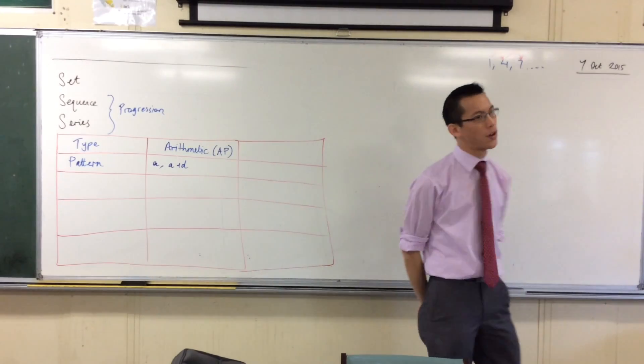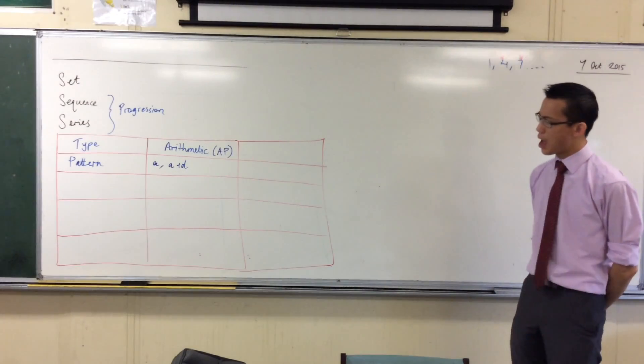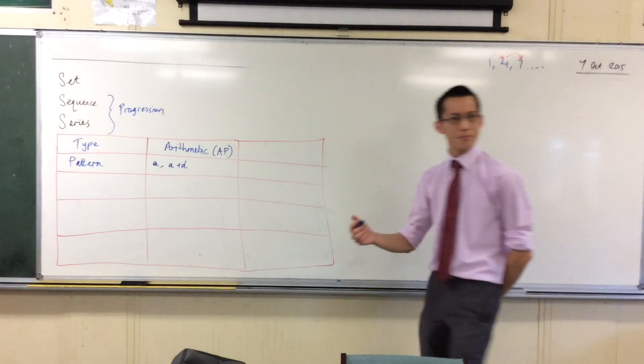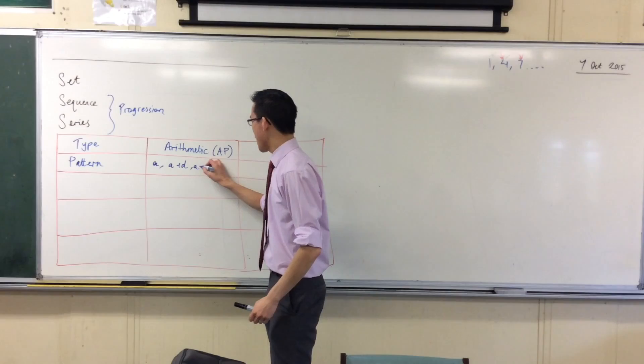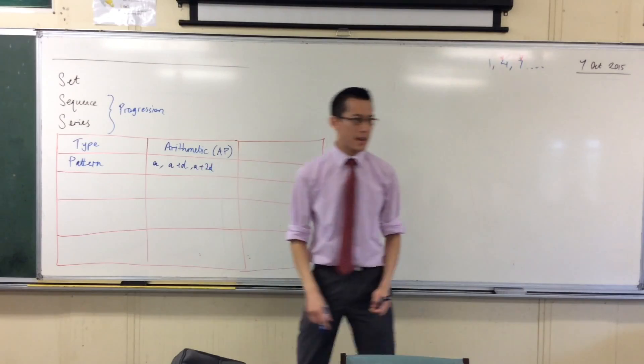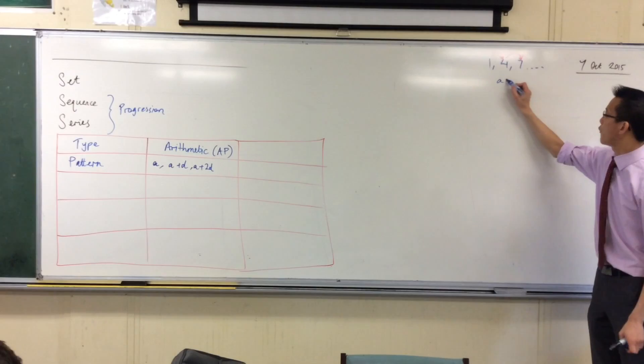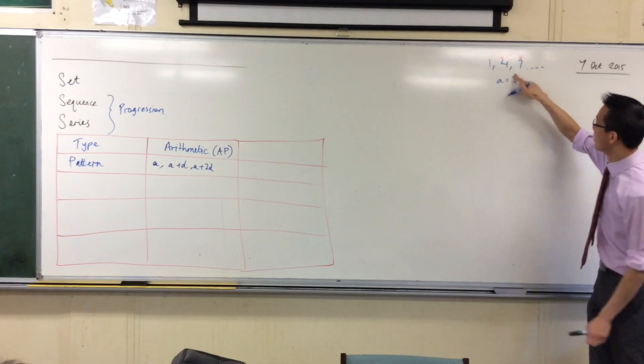Now that will be the first and second terms. How am I going to get to the third term if all I'm doing is adding another common difference? A plus 2D. Very good. A plus 2D. So for instance, in this case here, what do we have? I have a first value of three, sorry, I have a common difference of three. I have a first value of one.